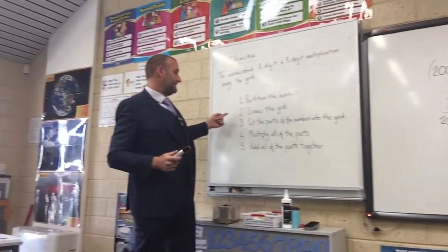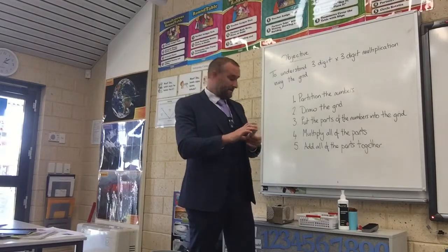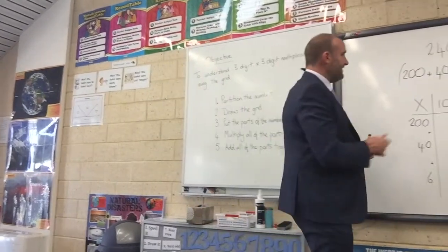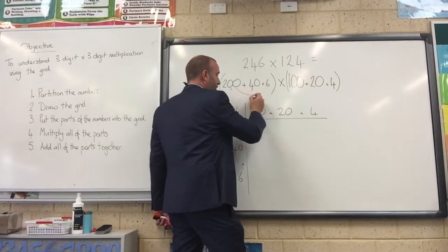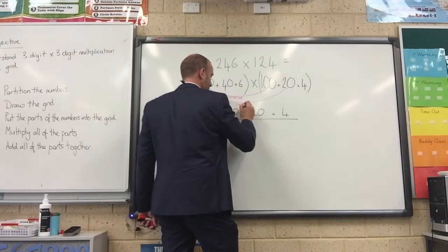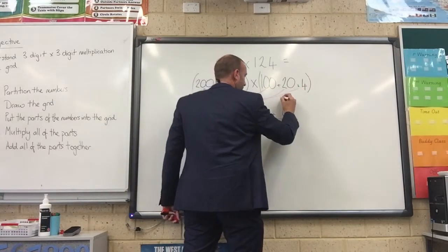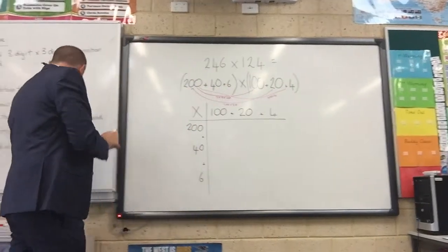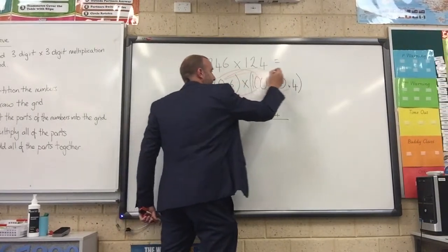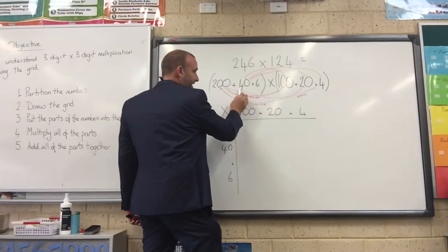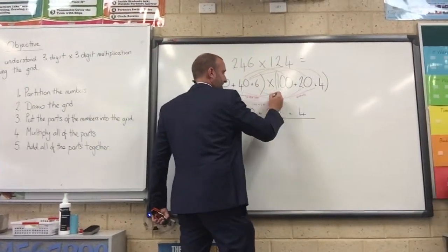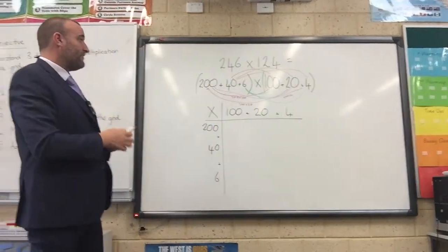Moving on to our fourth part — possibly a little more complicated because we have so many operations to do — we need to multiply all of the parts. Looking at 200, we multiply it by all parts of the other number: 200 times 100, 200 times 20, and 200 times 4. Then 40 times 100, 40 times 20, 40 times 4. And finally 6 times 100, 6 times 20, 6 times 4. We've got all nine operations there — three digits times three digits gives us nine operations.